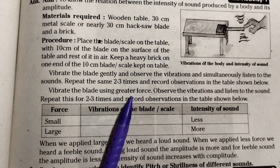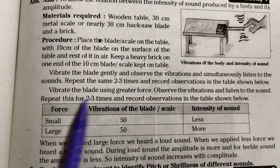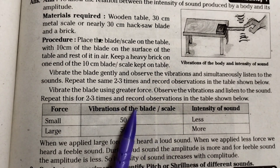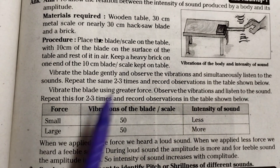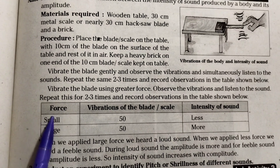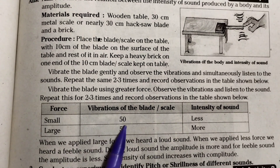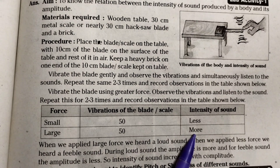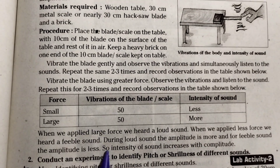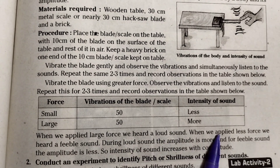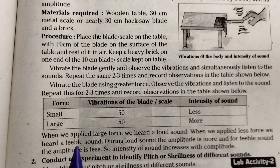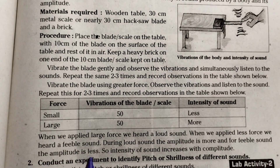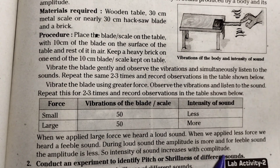Vibrate the blade using greater force. Observe the vibrations and listen to the sound. Repeat 2-3 times and record observations. First vibrate gently, then with greater force. Observations: Force small → vibrations small → intensity of sound less. Force large → vibrations large → intensity of sound more. When we applied large force we heard a loud sound; with less force we heard a feeble sound. During loud sound the amplitude is more; for feeble sound the amplitude is less. Conclusion: intensity of sound increases with amplitude.